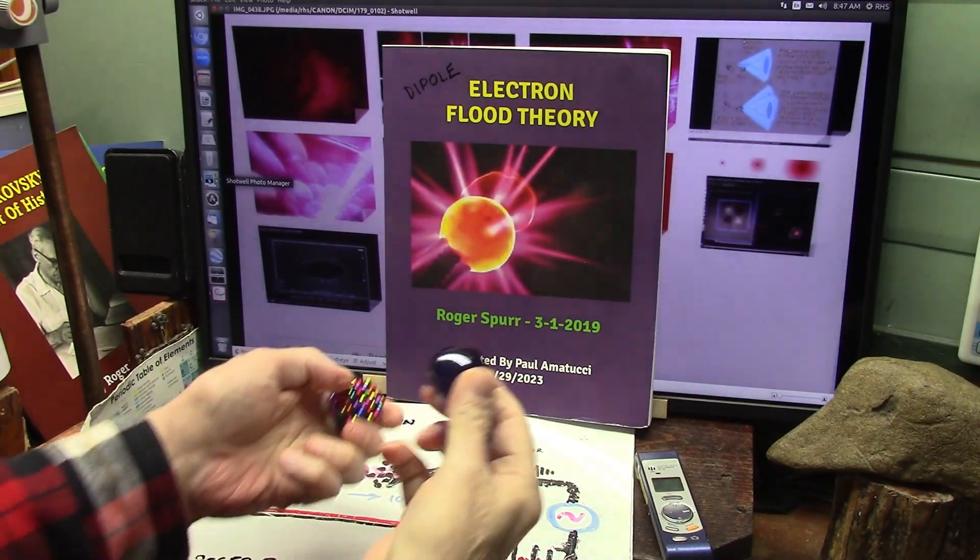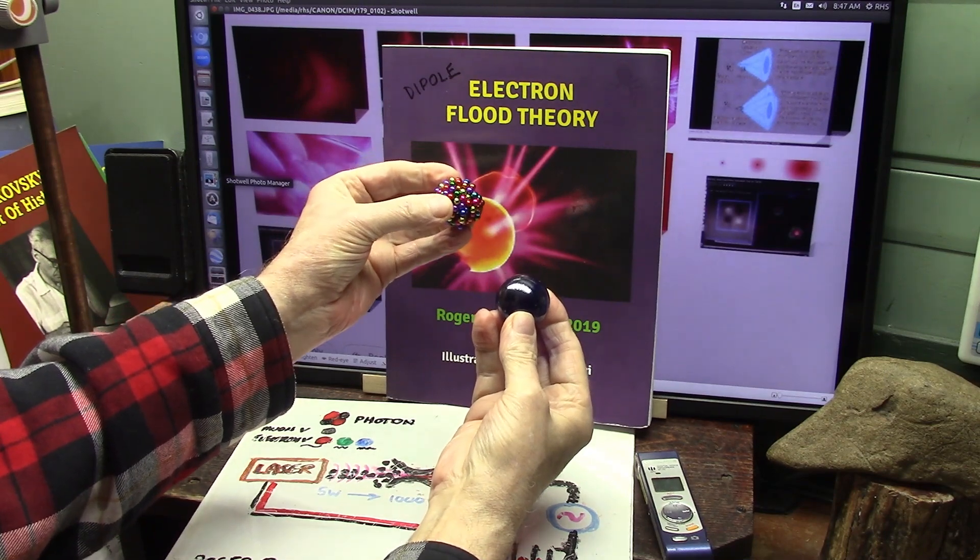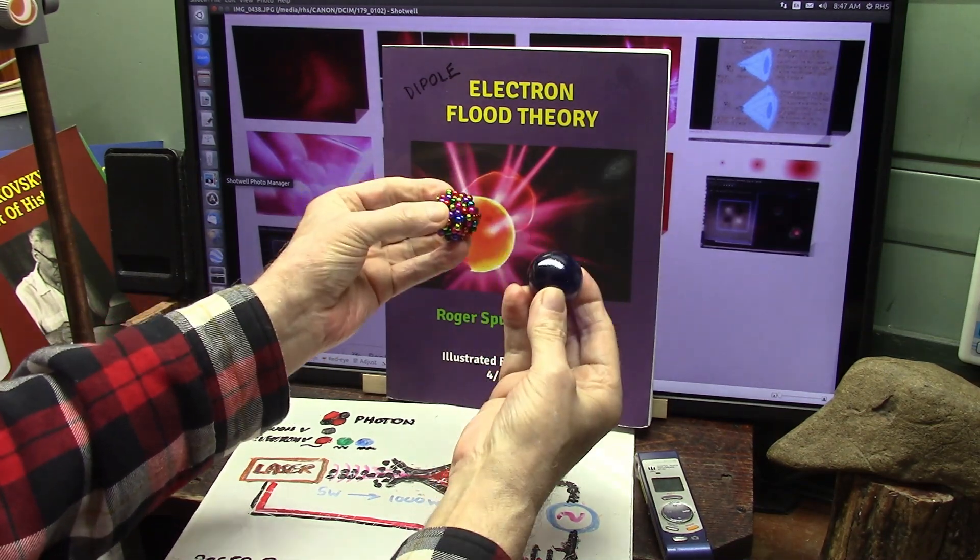Okay, this is also my claim. A proton is not made of one big ball. It's made of eighteen hundred and twenty-three dipoles.